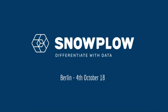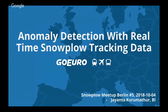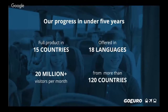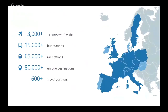I'm Jaintha from GoEuro. I work for the BI team as an engineer, and I'm going to talk about how we implemented anomaly detection with the Snowplow data that we're getting. GoEuro is a search engine and ticket booking company for all modes of travel across Europe — a full product in 15 countries, growing presence in over 35 countries, 18 languages, and 20 million-plus visitors per month. All that comes with a lot of data and a lot of providers.